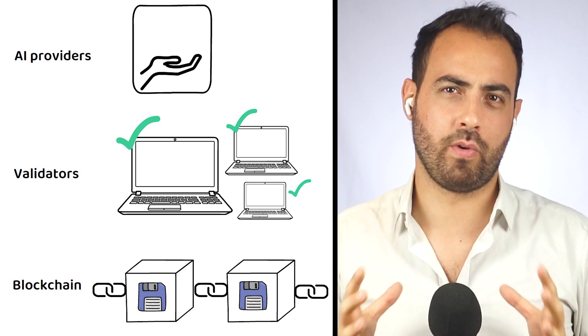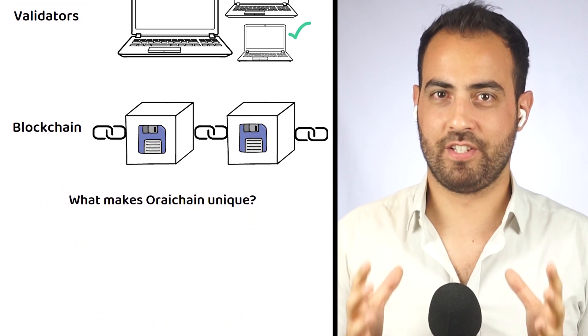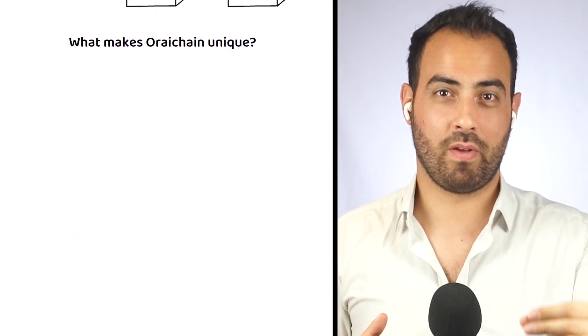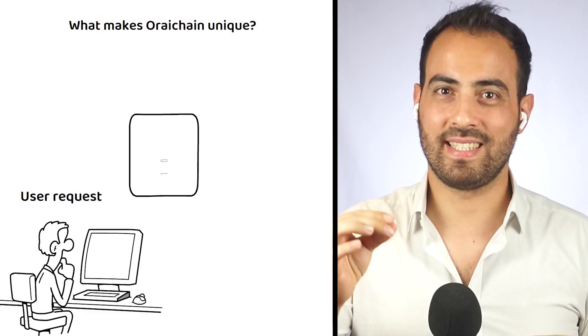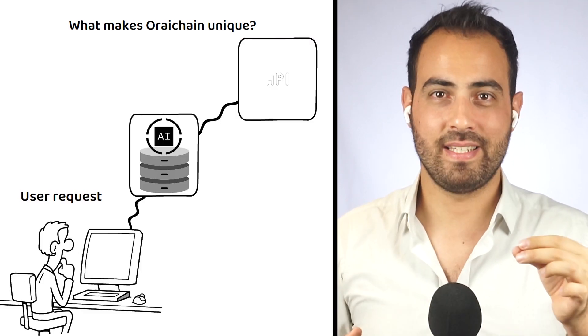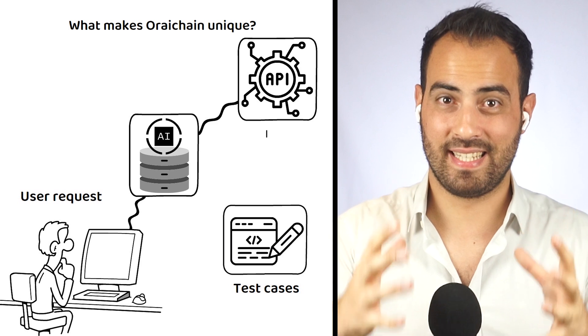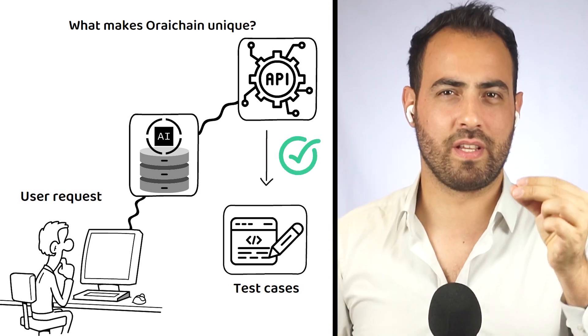So, what makes Orichain truly unique? One of the unique features of Orichain is that with its user request, there are test cases attached and the provider's API must pass a certain number of test cases to receive payment.